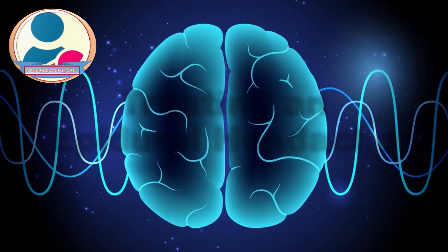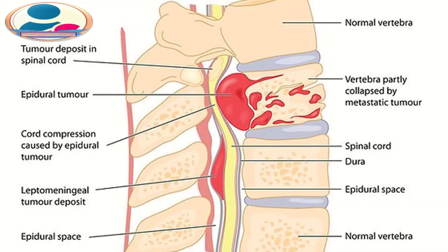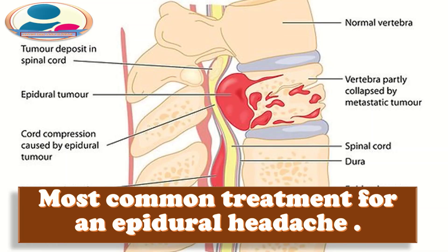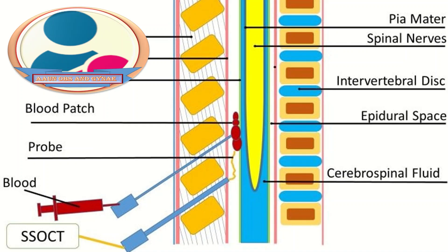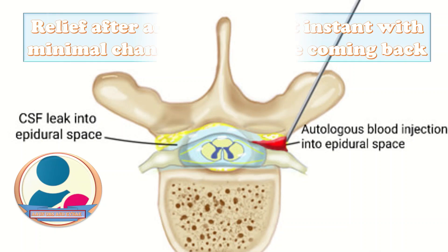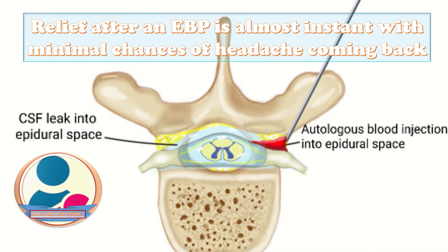The most common treatment for an epidural headache involves transporting blood to the epidural space — this is called an epidural blood patch. It may sound unusual, but an epidural blood patch can help relieve pain by taking blood from a vein and injecting it into the epidural space. This procedure can relieve headache symptoms in 61 to 98 percent of cases, and the relief is almost instant with minimal chance of the headache returning.